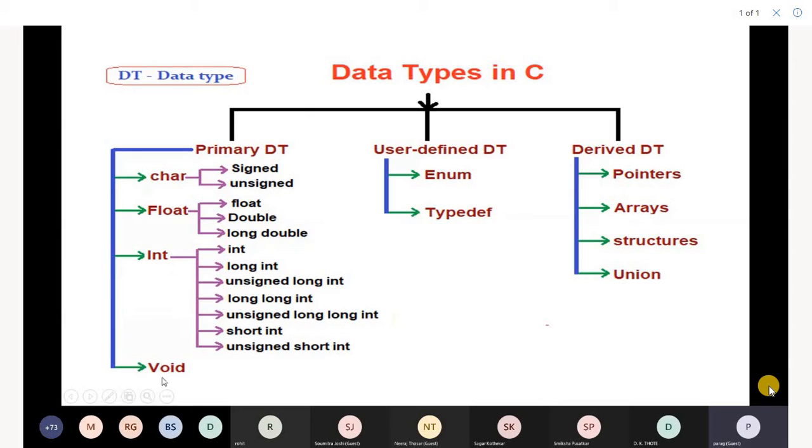When void is used, when you are specifying return type of a function, or you are creating a generic pointer, void star ptr, you can store integer address, character address, float address. In that case, void is used.